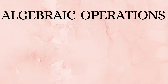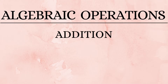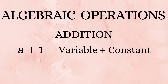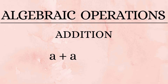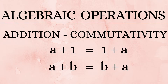First, we'll start with addition. The example 'a plus 1' shows that we can add a variable and a constant. 'a plus b' means we are adding two different variables. When we do 'a plus a,' we consider repeated addition as multiplication, so the same variable added twice gives us 2a. Note that the two terms in addition can be interchanged — this is the commutative property of addition.